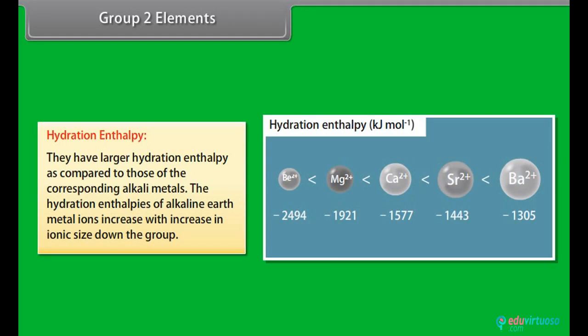Hydration enthalpy: They have larger hydration enthalpy as compared to those of the corresponding alkali metals. The hydration enthalpy of alkaline earth metal ions increases with increase in ionic size down the group.